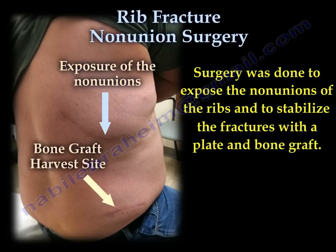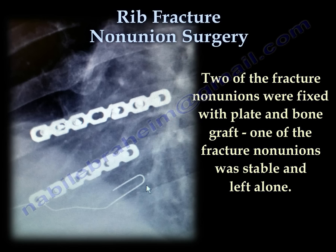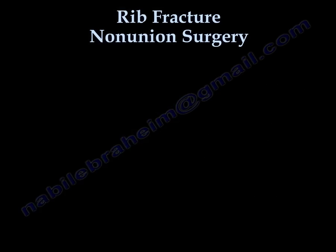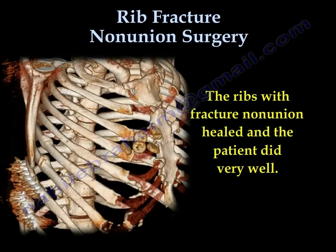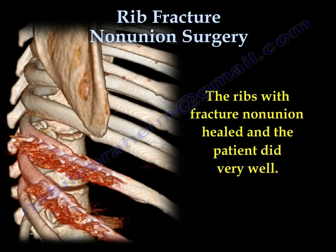You can see the exposure for the non-union at the top and the bone graft site at the bottom. Two of the fracture non-unions were fixed with plate and bone graft, and one of the fracture non-unions was stable and was left alone. The ribs with fracture non-unions healed and the patient did very well.